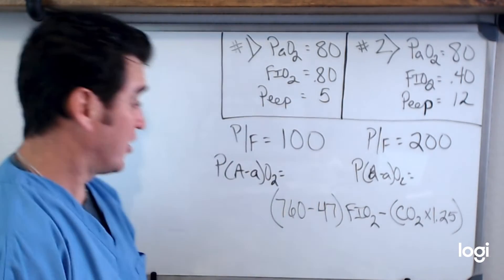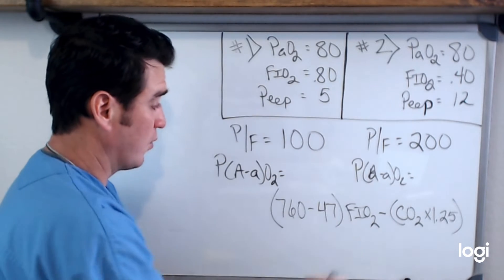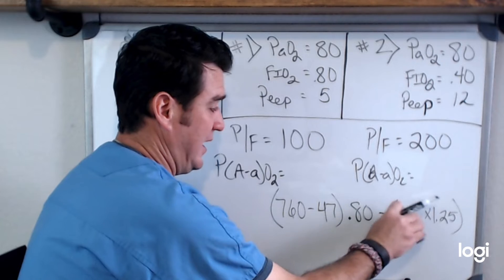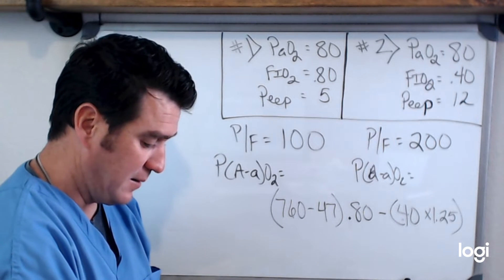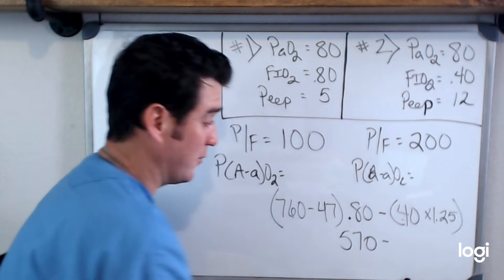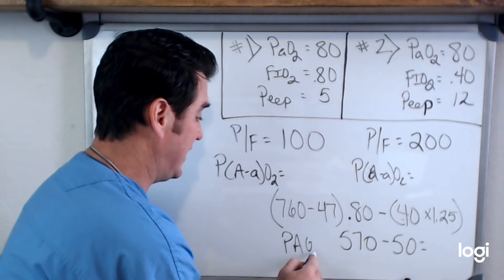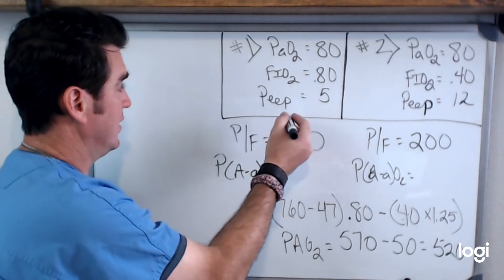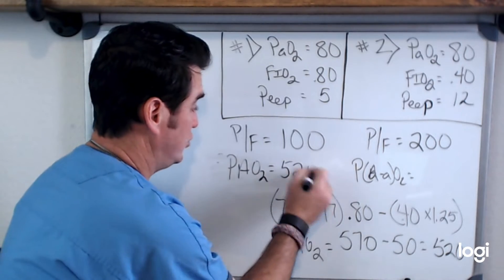We can now calculate arterial oxygenation. For patient number one, we plug in FiO2 of 0.8 and assume a normal CO2 of 40. So: 760 minus 47 is 713, times 0.8 is 570. Then we subtract 40 times 1.25, which is 50. That gives us a PAO2 of 520.